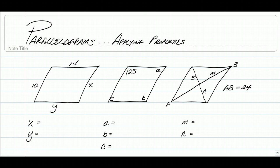So to start, these are pretty basic and simple. They use all of the properties that we learned. Remember we learned that opposite sides are congruent, opposite angles are congruent, same side interior angles are supplementary, and that the diagonals bisect each other.